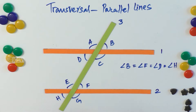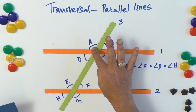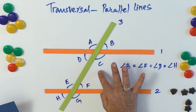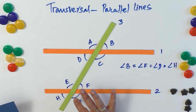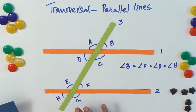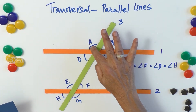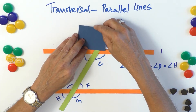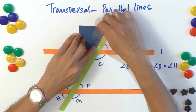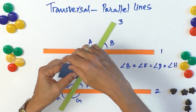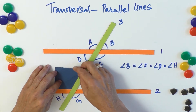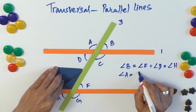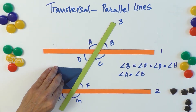Similarly, let us see how angles A and E, which are corresponding angles, relate to angles C and G, which are also corresponding angles — by virtue of A and C being vertically opposite angles. Taking the paper strip, we measure angle A, then place it on E, and notice that angle A equals angle E.